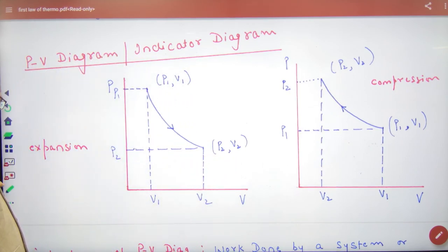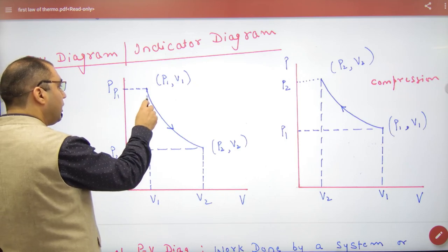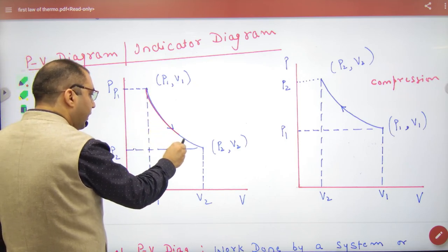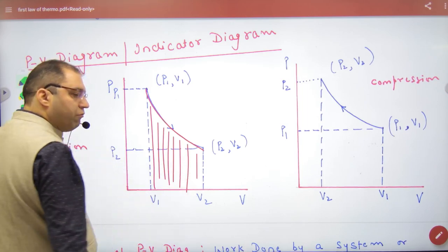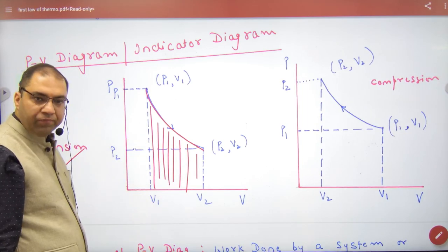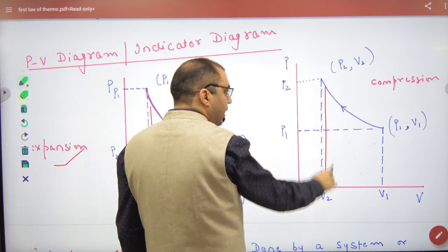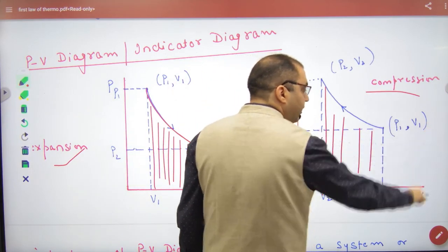What is the importance? The importance is that if PV Diagram under area calculate, amount of work done in Expansion, and if you calculate this area then it will work done in Compression.